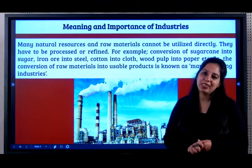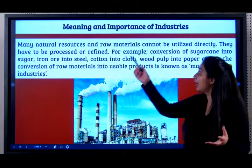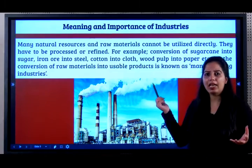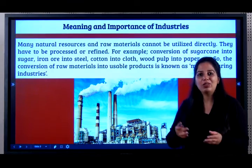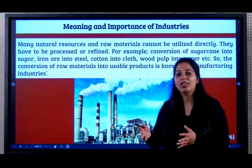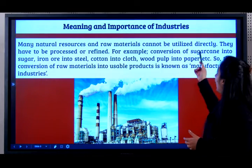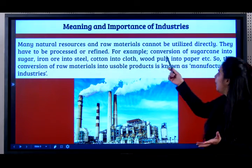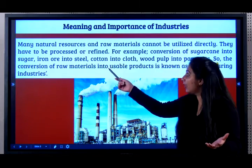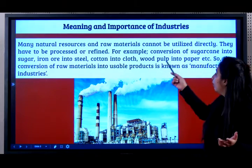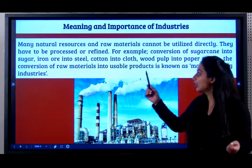Let's begin with the meaning and importance of industries. Many natural resources and raw materials cannot be utilized as they are. If I give you sugarcane and ask you to make a cake, you can't — you need to refine it first into sugar, which can then be used for sweets, chocolates, and cakes. They have to be processed or refined. For example: conversion of sugarcane into sugar, iron ore into steel, cotton into cloth, wood pulp into paper.